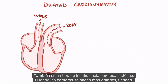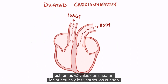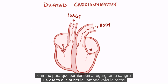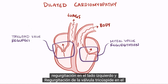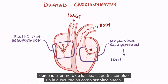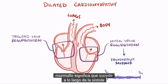Also when the chambers get larger, they tend to stretch out the valves that separate the atria within the ventricles. When stretched, the valves can't close all the way, so they start to regurgitate blood back into the atria, called mitral valve regurgitation on the left side and tricuspid valve regurgitation on the right. The former of which might be heard on auscultation as a holosystolic murmur, meaning that it happens throughout systole.